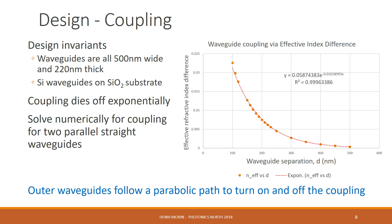Now, in order to model the coupling, we need to take into account a couple design invariants: the waveguides are all 500 nanometers wide and 220 nanometers thick, and they are silicon waveguides on a silicon oxide substrate. We assume the coupling dies off exponentially, and then we solve numerically for coupling for two parallel straight waveguides.